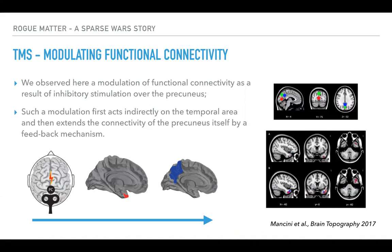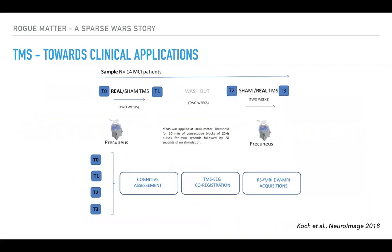After this, we decided there should be a bigger project. We looked at what the effects would be with a more intensive treatment on an MCI population. Here they had, for two weeks, a real TMS session each day, then a washout period of two weeks, and then two weeks with sham or vice versa — a double-blinded design.